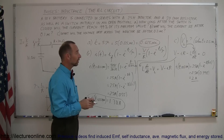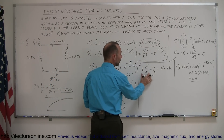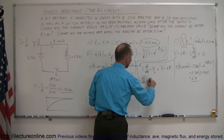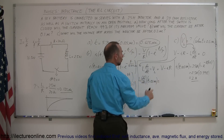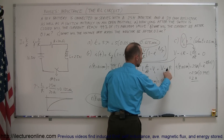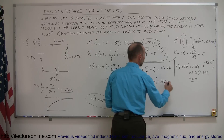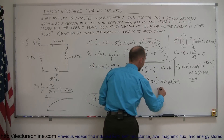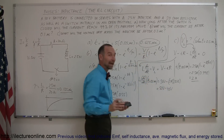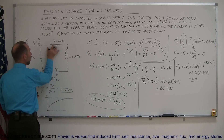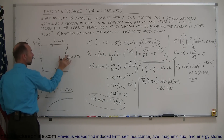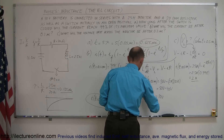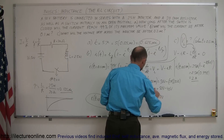Now we know the current at T = 0.2 seconds, so we can find the voltage drop across the inductor. L·dI/dt at T = 0.2 seconds equals the battery voltage of 50 volts minus the voltage drop across the resistor, which is 2 amps times 20 ohms = 40 volts. So 50 volts minus 40 volts equals 10 volts. The voltage drop across the inductor at 0.2 seconds is 10 volts. And that's how you do that.